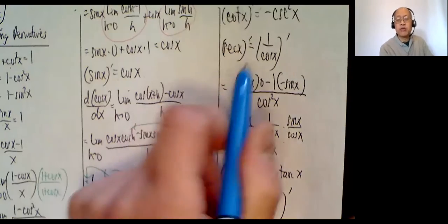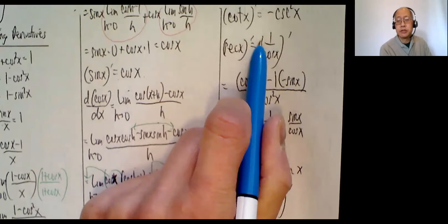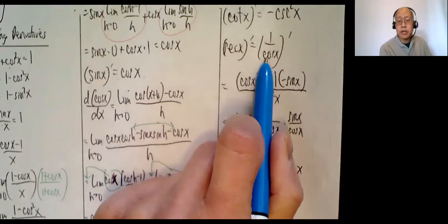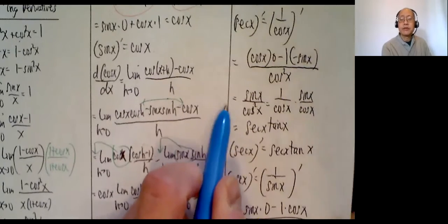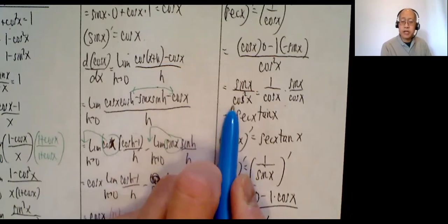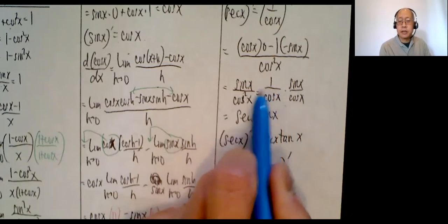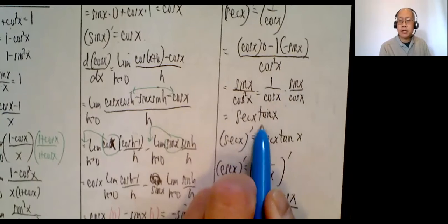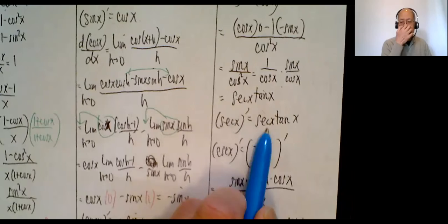Secant is 1 over cosine. Quotient rule: bottom times derivative of the top — derivative of 1 is 0 — minus 1 times the derivative of cosine, which is negative sine x. Over cosine squared x. Double negative gives sine x over cosine squared x. Breaking it up: 1 over cosine x times sine x over cosine x equals secant x times tangent x. Derivative of secant x is secant x tangent x.